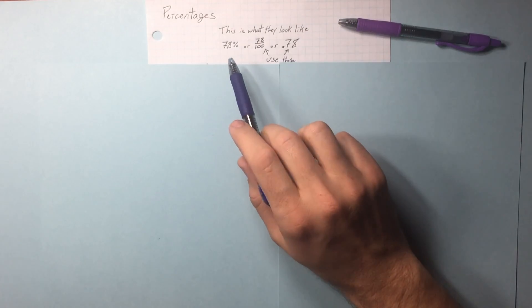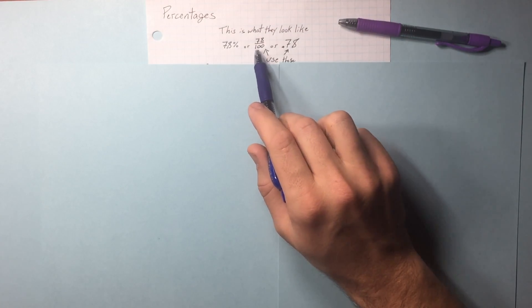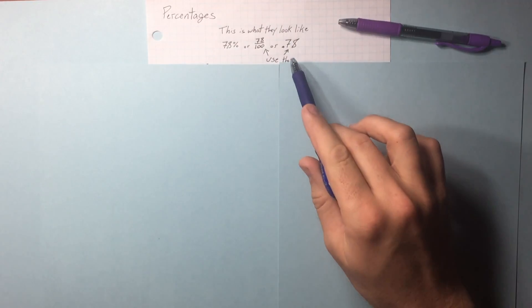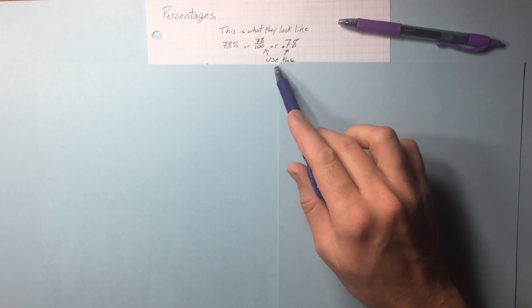Percentages. This is what they look like. 78% is the same thing as 78 over 100, same thing as 0.78. Use these. They're much easier to use inside equations.